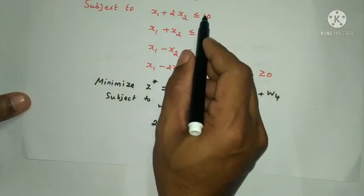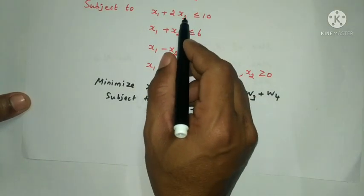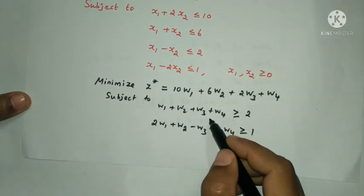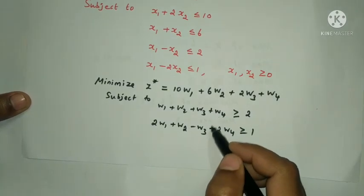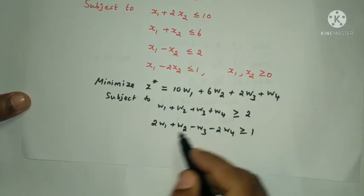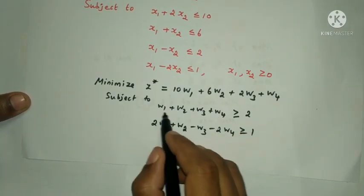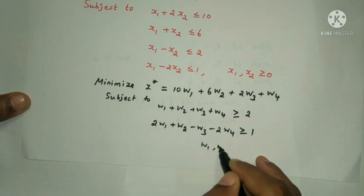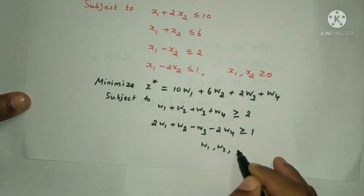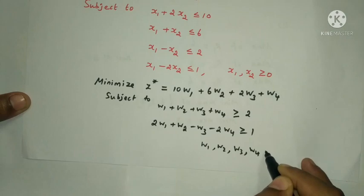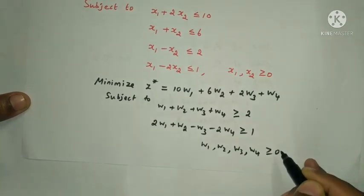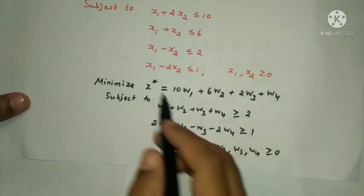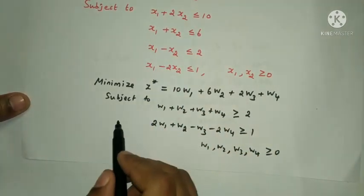The dual variables w1, w2, w3, w4 ≥ 0. This is the dual of the given linear programming problem.